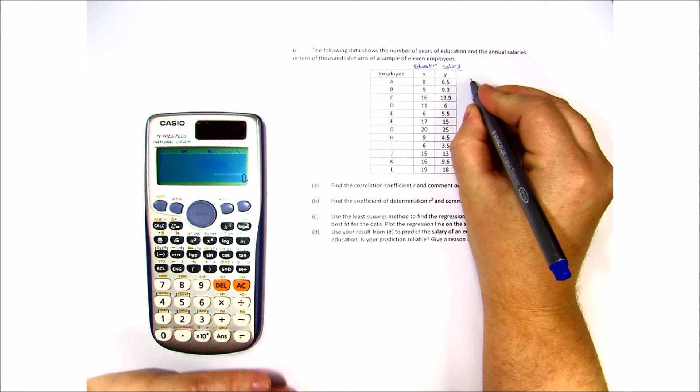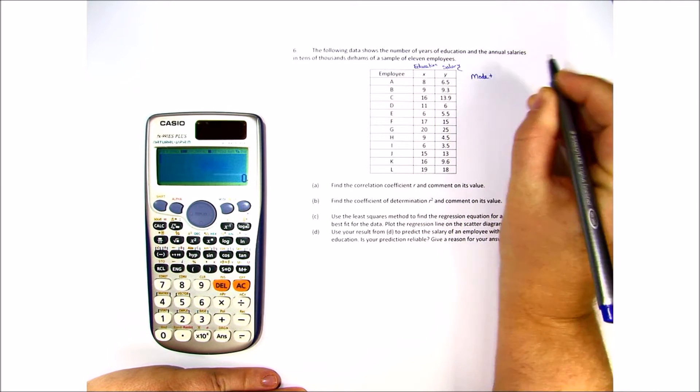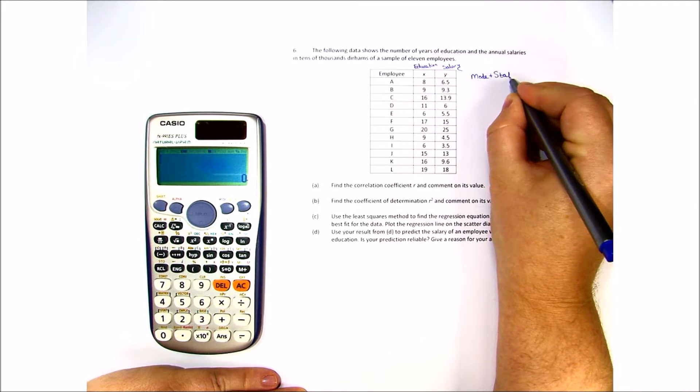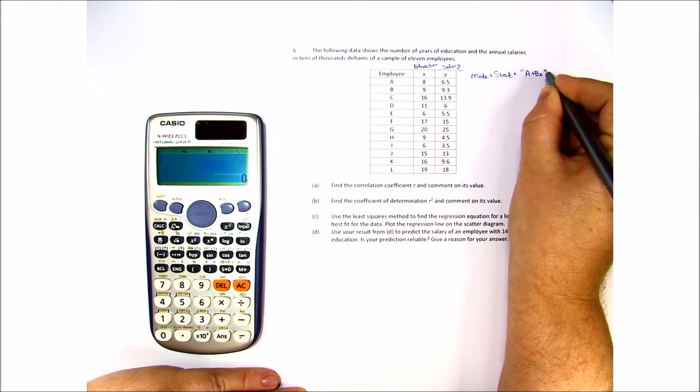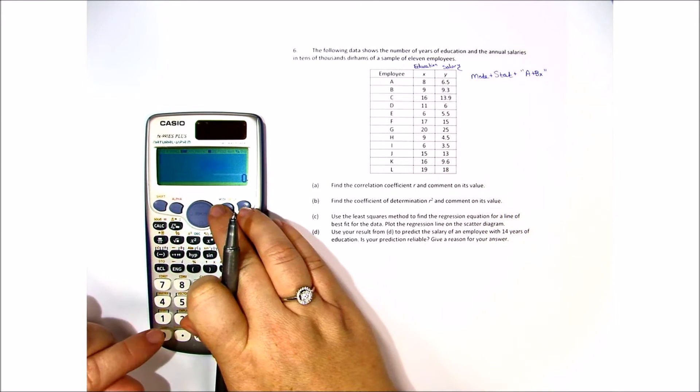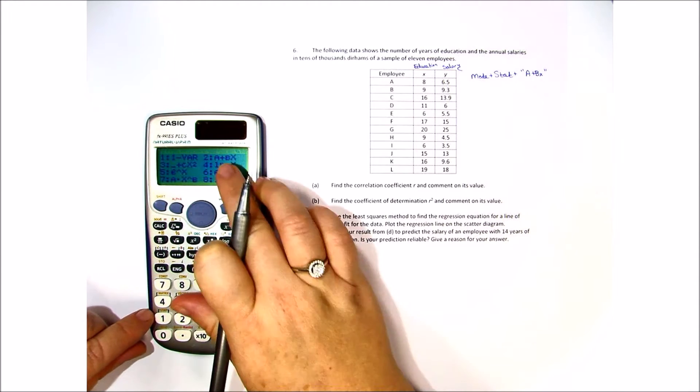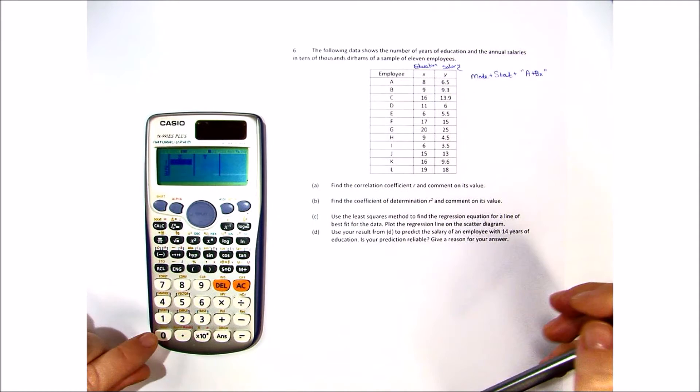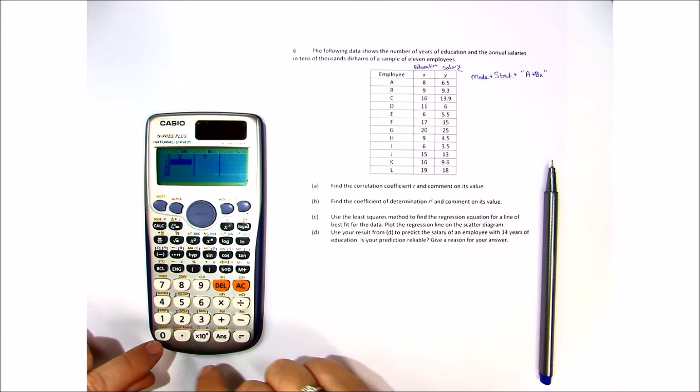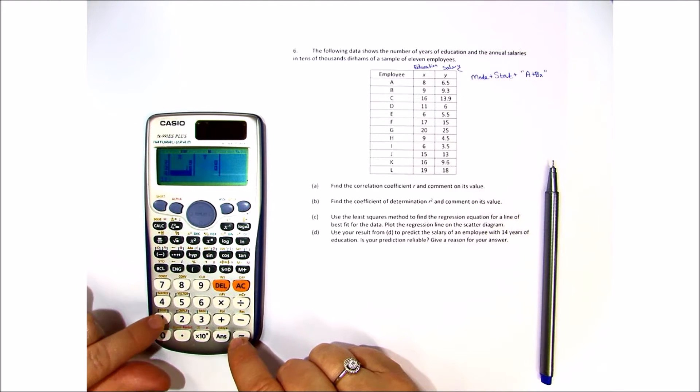Now the first thing is we need to put in the data. So to do this we're going to hit mode and then we're going to hit stat and then we're going to hit a plus bx. So let's go ahead and do this on our calculator. Mode, stat which is number 3 and then a plus bx which is number 2. We have an x and a y chart. So we need to put in all of the data, just go ahead and fill in everything as you see.